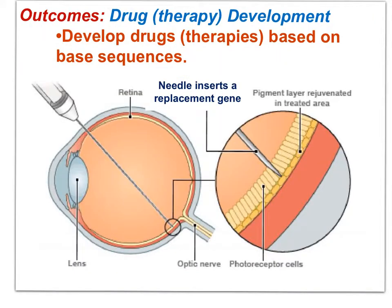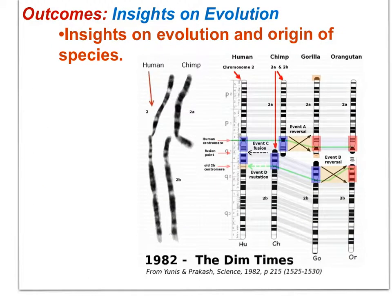The Human Genome Project has stimulated therapies such as the injection of DNA containing correct copies of a gene to reverse, for example, the degeneration of the retina. This is gene therapy. The Human Genome Project has also provided insights into evolution and the relatedness of different species.